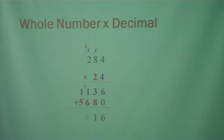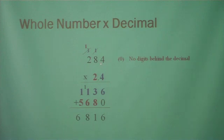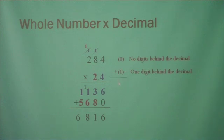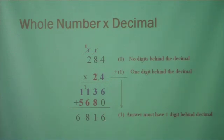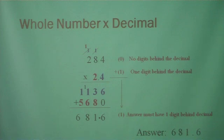6 plus 1 is 7 plus 1 is 8, and 5 plus 1 is 6. Now this is where it's different. We're going to count how many digits are behind the decimal in the first number. If there is no decimal, it's assumed the decimal is in the back, so there are no digits behind the decimal in that number. Here we have one digit behind the decimal. You add these up and your answer must have one digit behind the decimal. So we put our decimal right there. And that's how you multiply a whole number times a decimal. Your answer is 681 and 6 tenths.